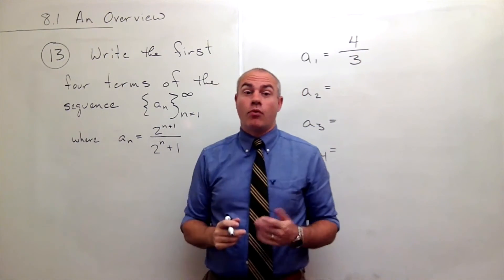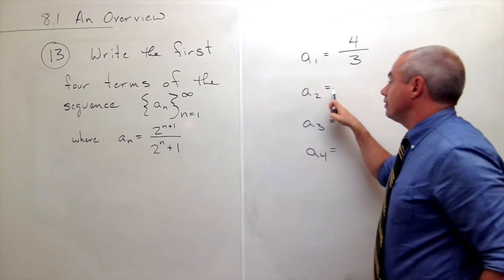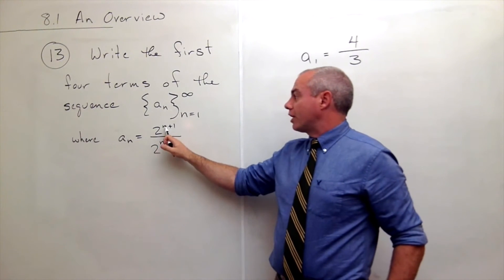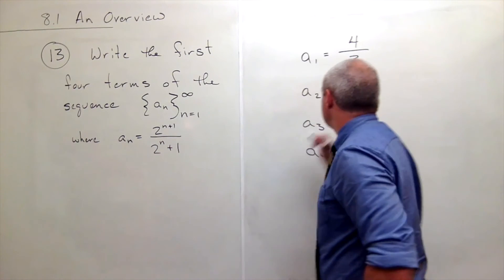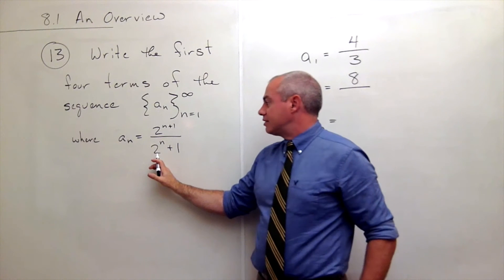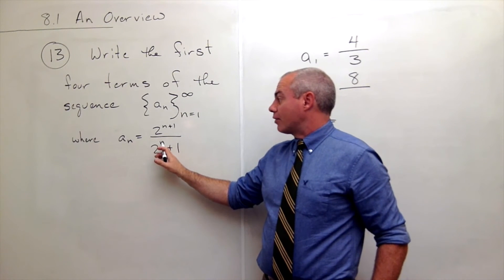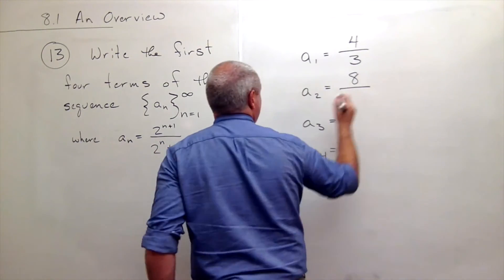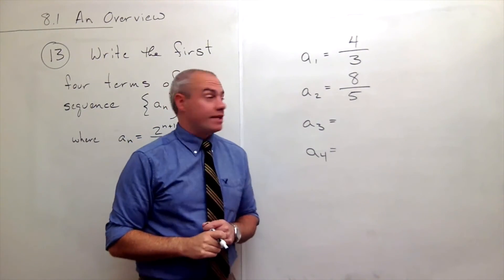Let's do a sub 2. So I plug in 2 for n and I get 2 plus 1 is 3. 2 cubed is 8, and on the bottom I get 2 to the second power is 4, plus 1 is 5. So I get 8 fifths for a2.